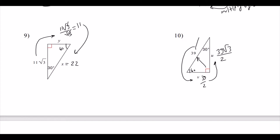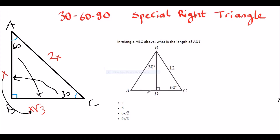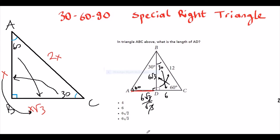Now the harder problem. Given triangle ABC, find length AD. The angle is 30°, and since adjacent angles are supplementary (90° + 90°), this angle is automatically 60°, making the remaining angle also 30°. In the 30-60-90 triangle, given across 90°, across 30° is half of it, which is 6. The height is the perpendicular bisector, so the other segment is also 6. Across 60° is 6√3, and dividing by √3 confirms the answer is 6.